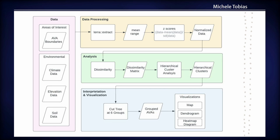Once all that data has been extracted and normalized, it goes into a dissimilarity matrix so we can find out how different these AVAs are from each other in this multi-dimensional space. From that we build a hierarchical cluster analysis to produce hierarchical clusters. Once we have the clusters, we have a dataset telling you which boundary goes into which cluster and how they're all hierarchically grouped. I then cut them into six groups for the data visualization.